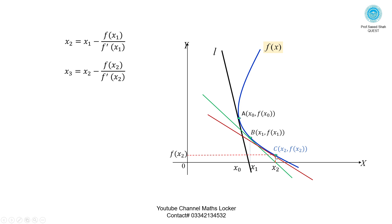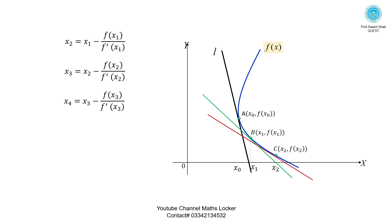Draw the normal from point x₂ to the curve — point C with coordinates (x₂, f(x₂)). Repeat the tangent procedure to get x₃ = x₂ - f(x₂) / f'(x₂). Again draw the normal from x₃ and repeat to get x₄ = x₃ - f(x₃) / f'(x₃). Continue this process until getting the root.